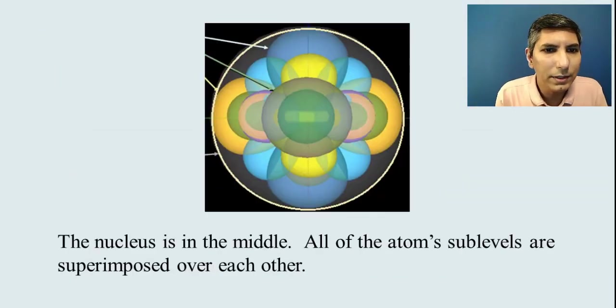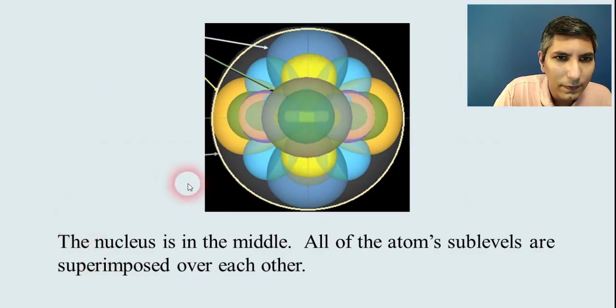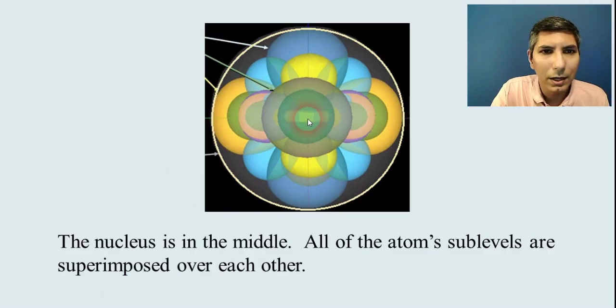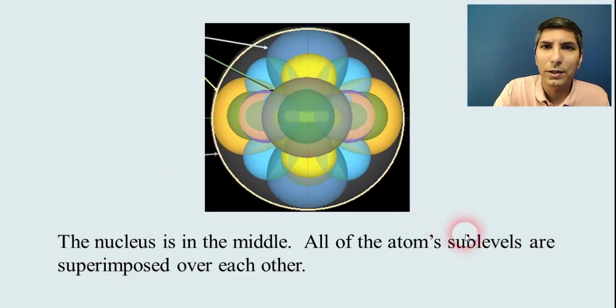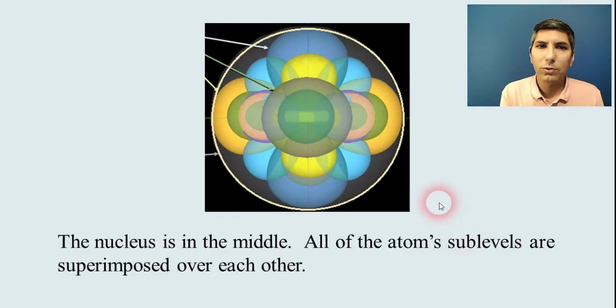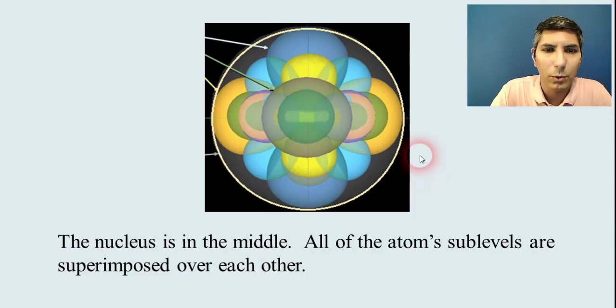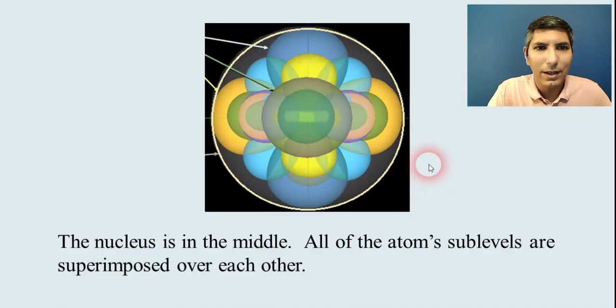The nucleus is, as we've said earlier, unimaginably tiny in there. All of these sublevels and orbitals are being superimposed over each other in this picture. So what we have is basically all these orbitals moving around essentially on top of each other or over each other. And this is what you have in an atom. It looks like chaos. It seems to be rather orderly as it turns out.